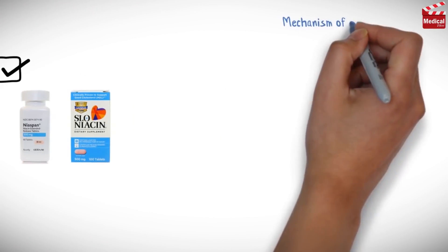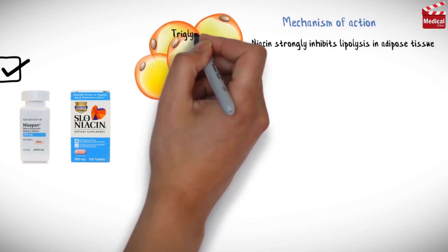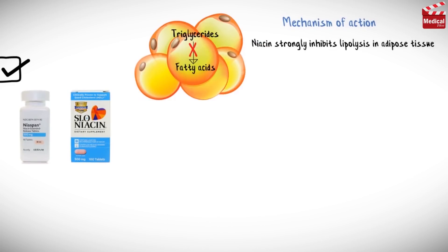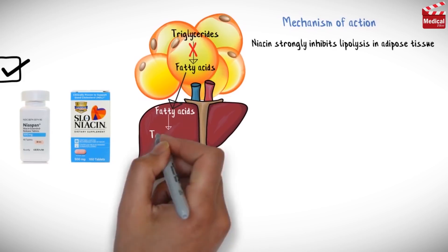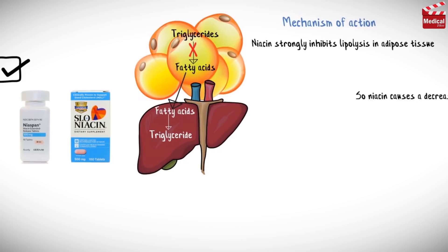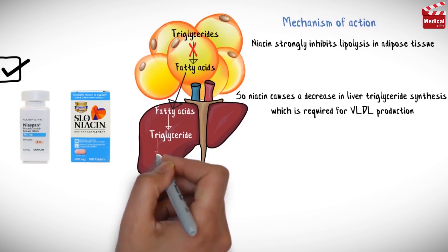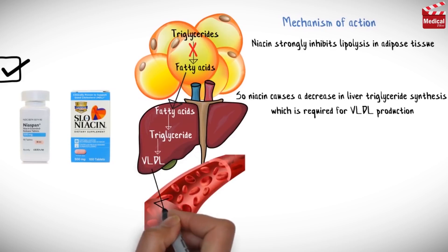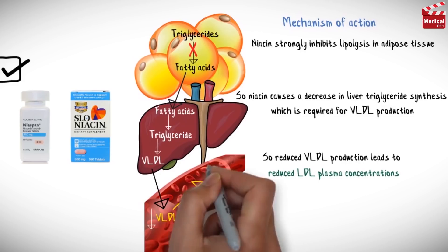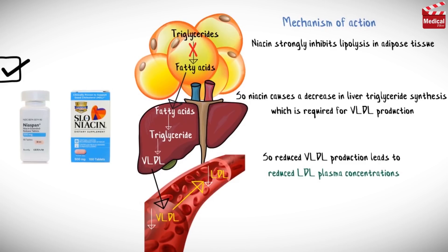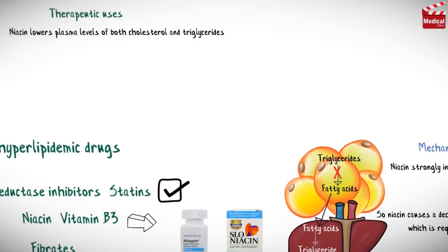Niacin strongly inhibits lipolysis in adipose tissue, which is the primary producer of circulating free fatty acids. The liver normally uses these circulating free fatty acids as a major precursor for triglyceride synthesis. So niacin causes a decrease in liver triglyceride synthesis, which is required for VLDL production. Since LDL is derived from VLDL, reduced VLDL production leads to reduced LDL plasma concentrations. Niacin also increases HDL plasma concentration.